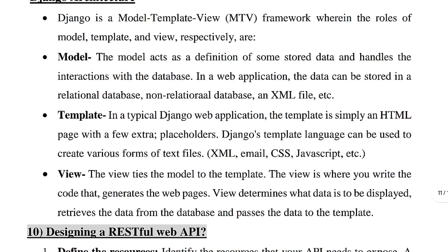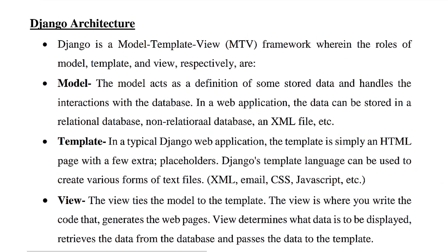What is the first template? In a typical Django web application, the template is simply an HTML page with a few extra placeholders. We call it a template — an HTML page with a few extra placeholders. Django's template language can be used to create various forms of text files.